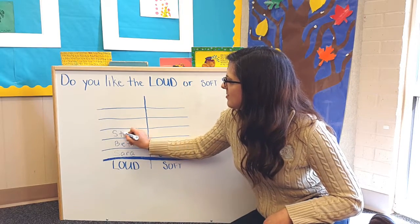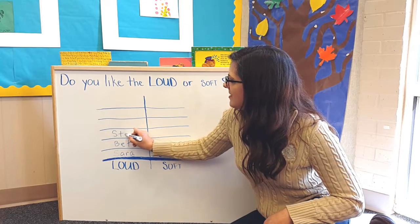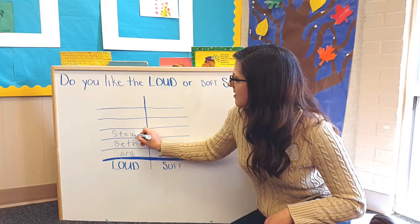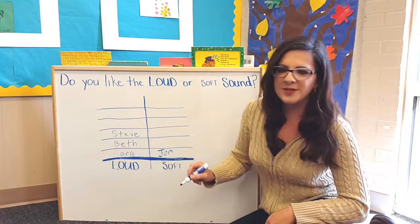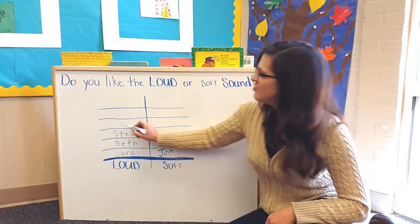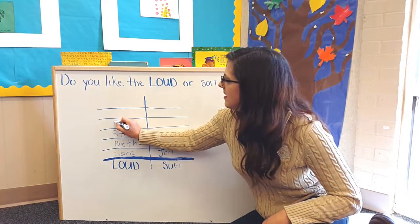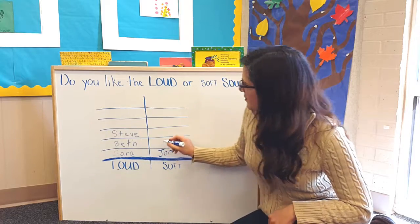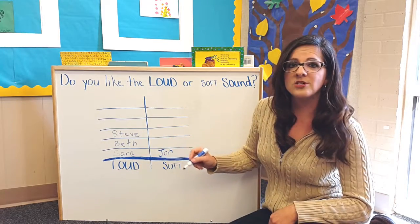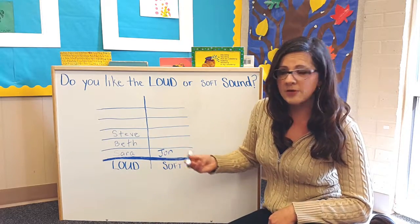We know children all have a different idea on what they like. So we will fill in the graph for each child and they will feel important and they will get a chance to use their vocabulary.